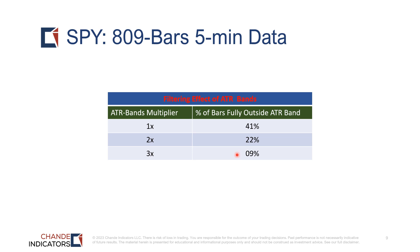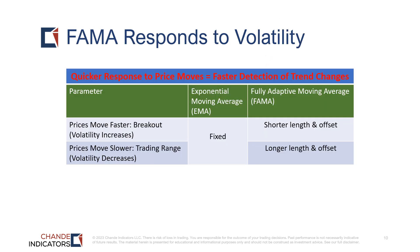Here we summarize how FEMA responds to volatility. When volatility increases, the EMA parameters are fixed but FEMA down-shifts to a shorter length and a shorter offset. When volatility decreases, the EMA parameters are fixed but FEMA up-shifts to a longer length and a longer offset.